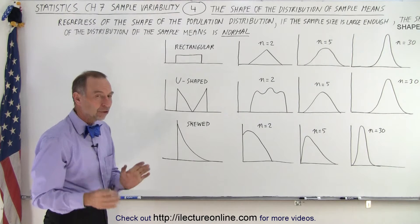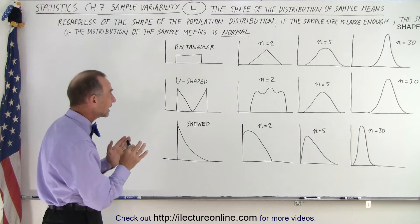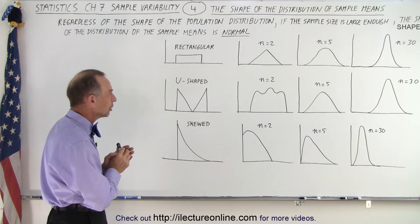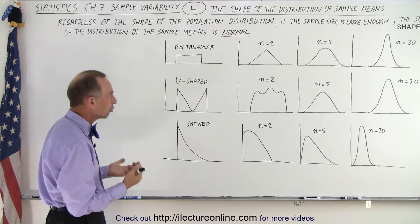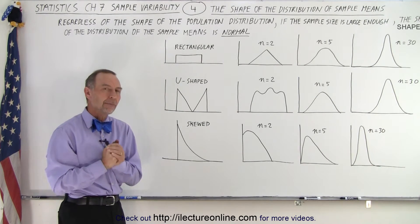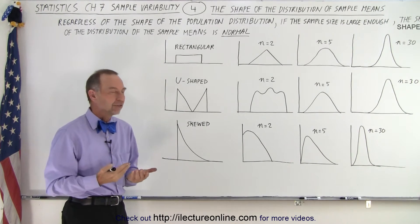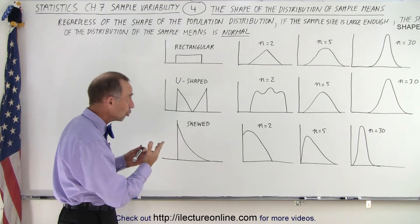What do the distributions look like when we just look at the samples? The means of the samples, how are they distributed? Well it depends a lot upon the sample size. That's a big contribution to the shape.